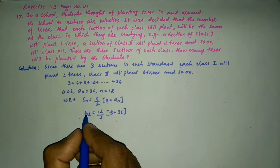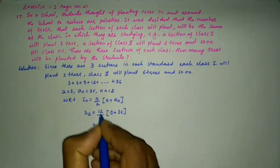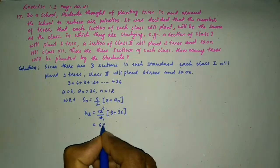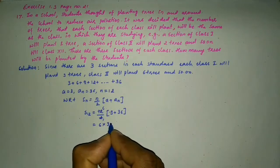S_12 is equal to—12 divided by 2 is 6. 6 into 3 plus 36 is 39.